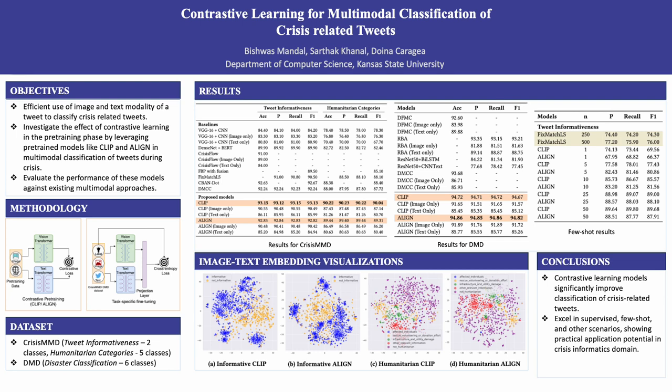Our findings demonstrate that our approach clearly outperforms existing techniques by showing higher accuracy, precision, recall, and F1 scores in predicting crisis-related tweets across all experiments and datasets. Remarkably, these models also excel in few-shot classification scenarios. The results obtained by existing works using 500 samples of each class are achieved and even exceeded by using just five samples of each class with our approach.